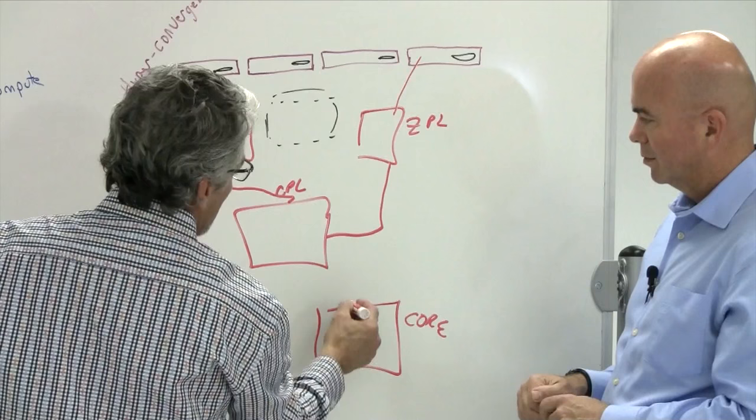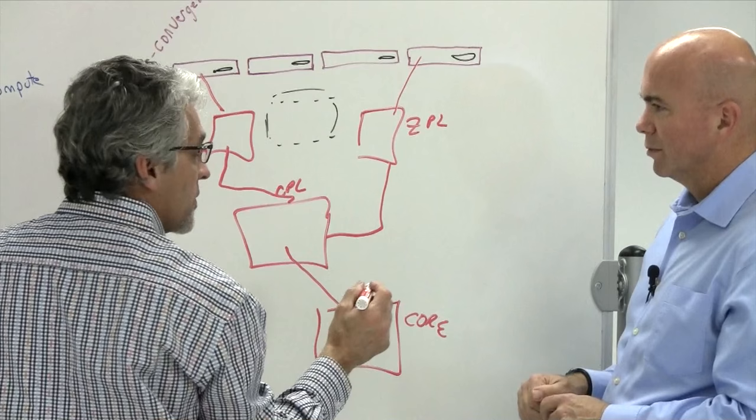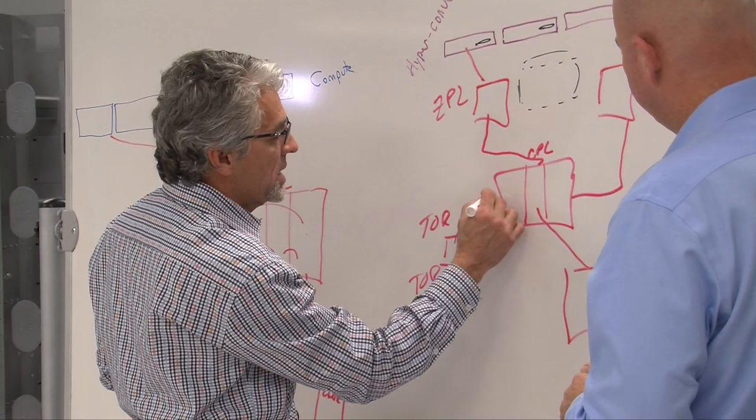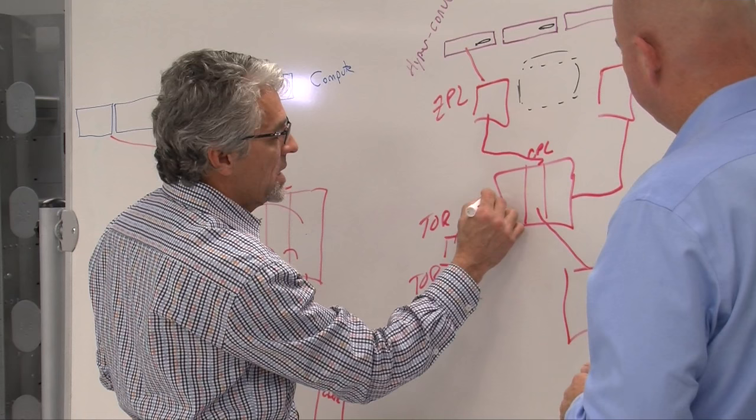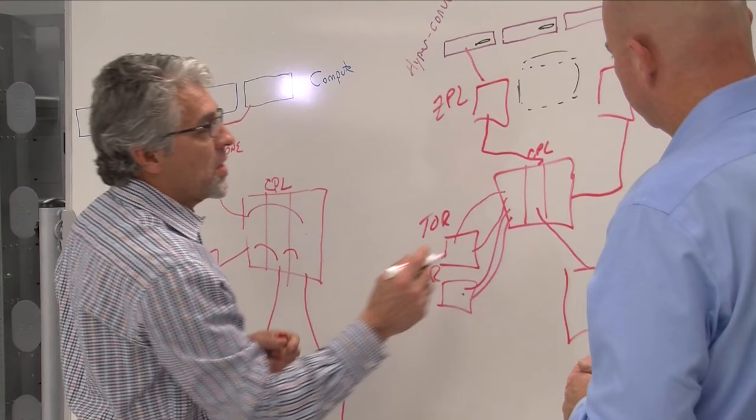So once again, you're trunked up here. So your core switches have 40 gig fiber ports connecting it back to the central. You have 10 gig links coming from your top of rack switch to support your nodes. You also have 40 gig ports coming back to talk to your core.